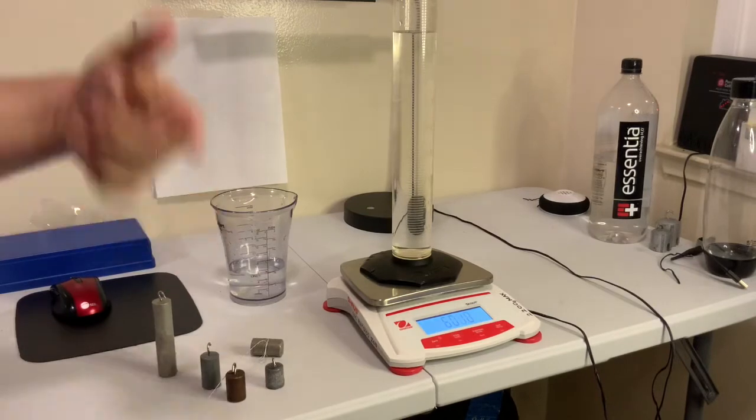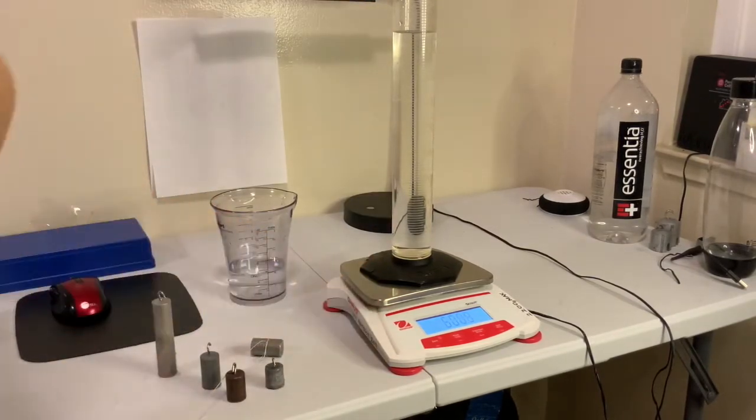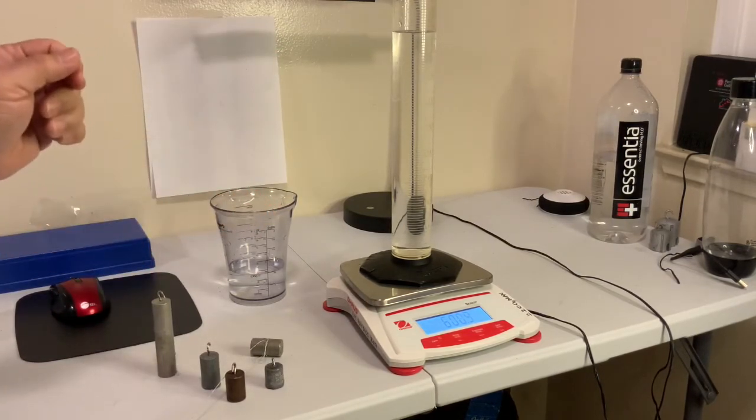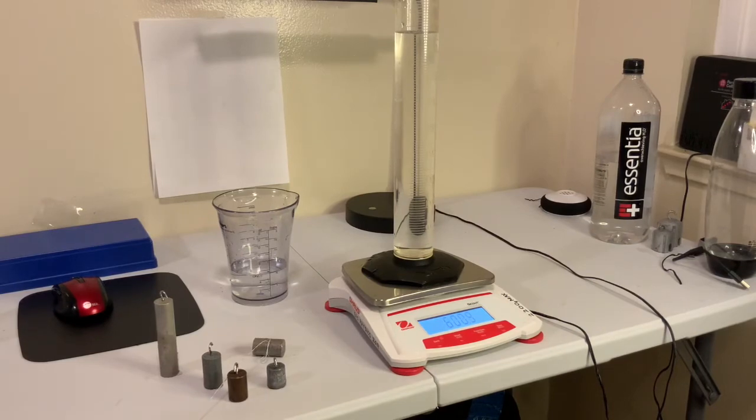So given the masses that we just determined here using the scale before and after I submerge these things, you should, according to step seven there, subtract five from six, and this will give you the buoyant force.